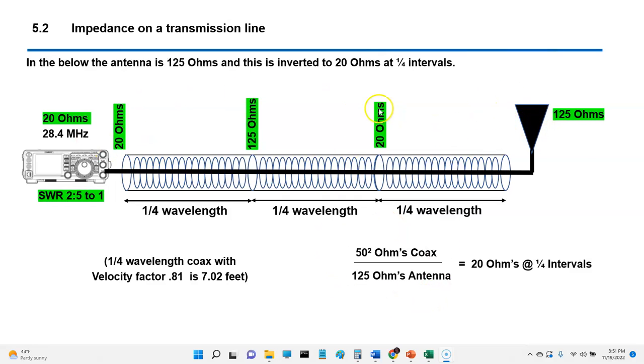Here's 125 ohms, again, three-quarters of a wavelength that's going to have this impedance here based on this formula.